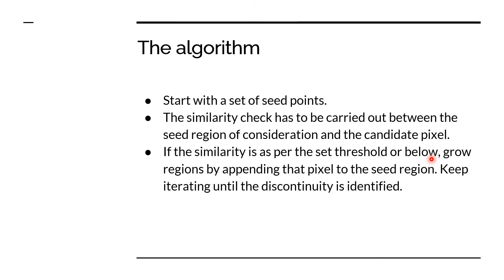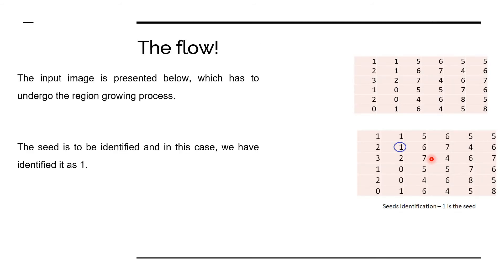What is the algorithm? Very simple. I start with a set of seed points, then a similarity check is carried out with the pixel I want to examine. If the similarity meets the threshold set, I add it into my region and keep moving. I keep iterating until a discontinuity is identified. Let's take a very simple example and see the flow.